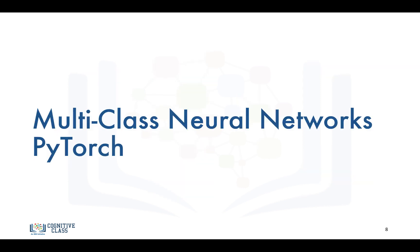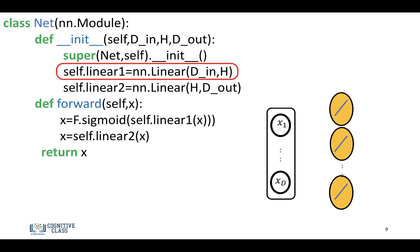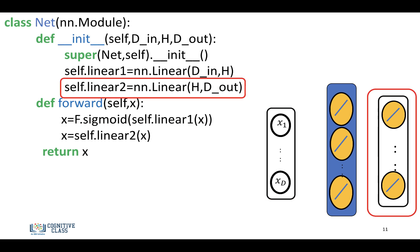Let's see how to build a multi-class neural network in PyTorch. Here's our custom module, and everything looks pretty similar. We have our input dimension, and then we have the number of hidden layers denoted by H. We take the input to our hidden layer, and we're going to construct a second layer.